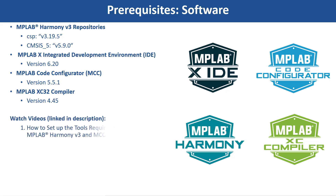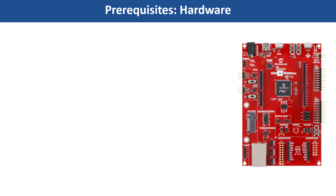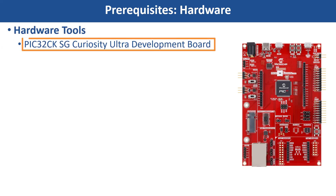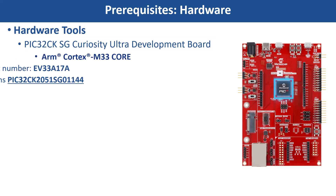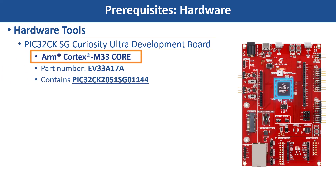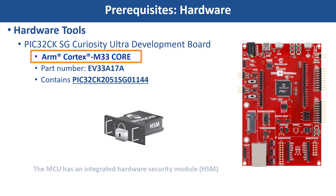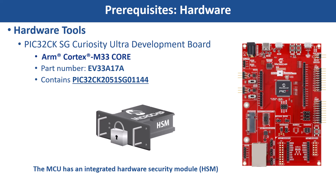If you are new to MCC, be sure to watch these videos. You can find the links in the video's description. For this demonstration, we will use the PIC32CK-HG-Curiosity Ultra Development Board. This project uses the ARM Cortex-M33-based PIC32CK-HG MCU with TrustZone support. This MCU has an integrated hardware security module.